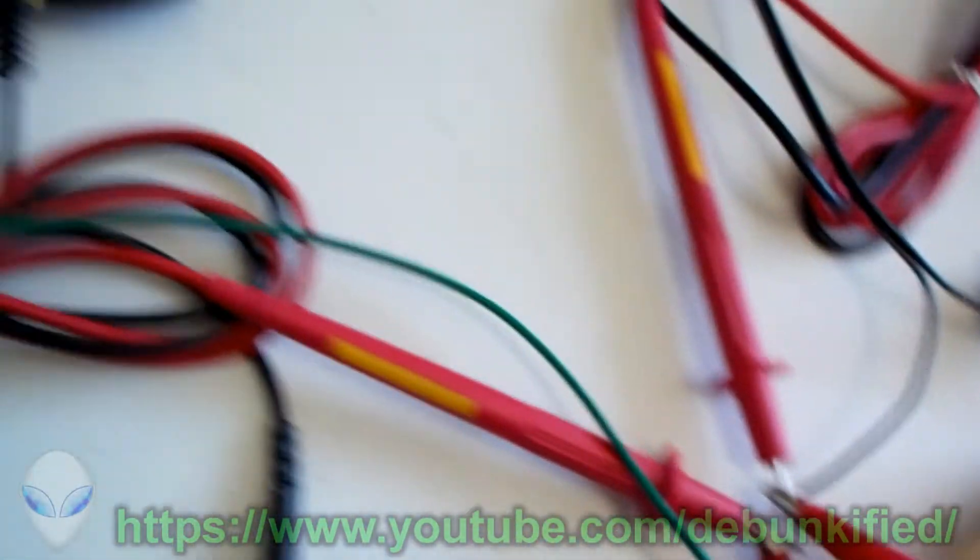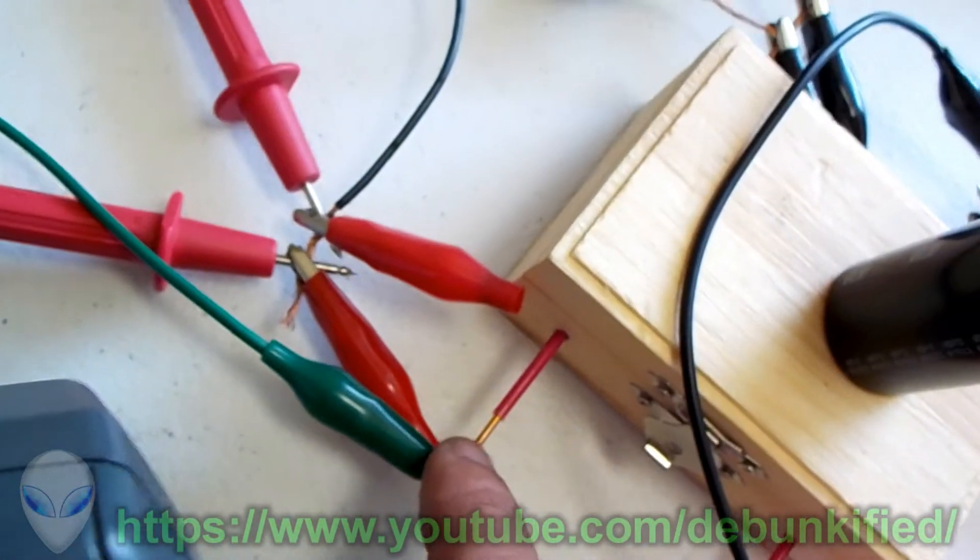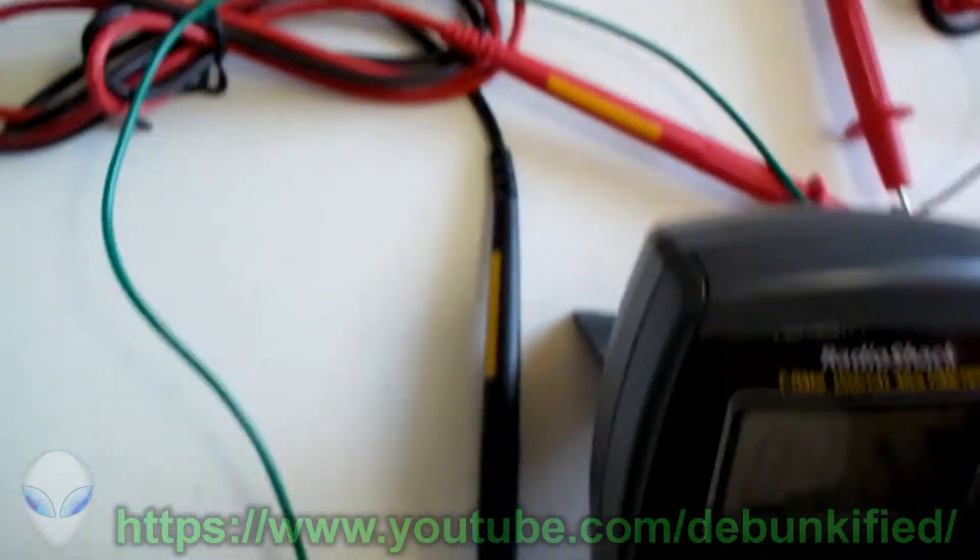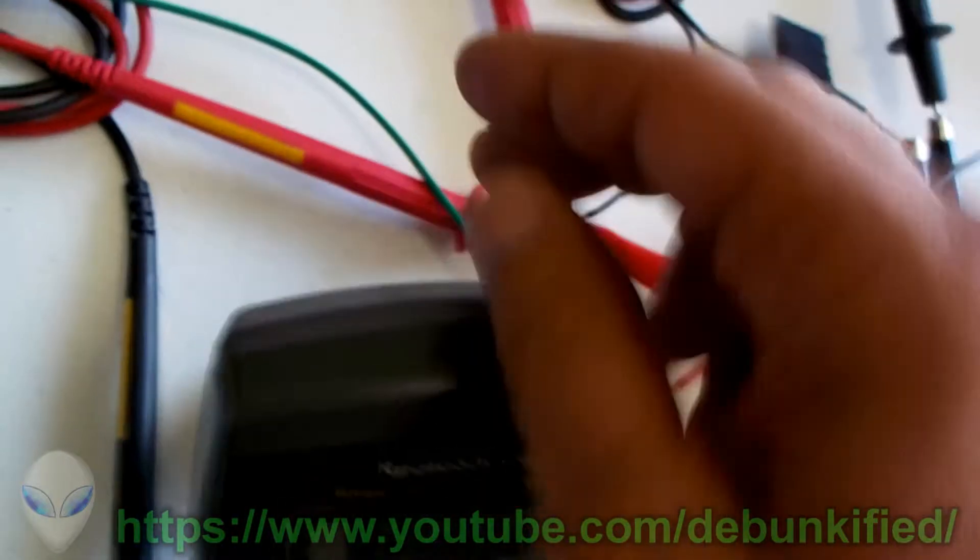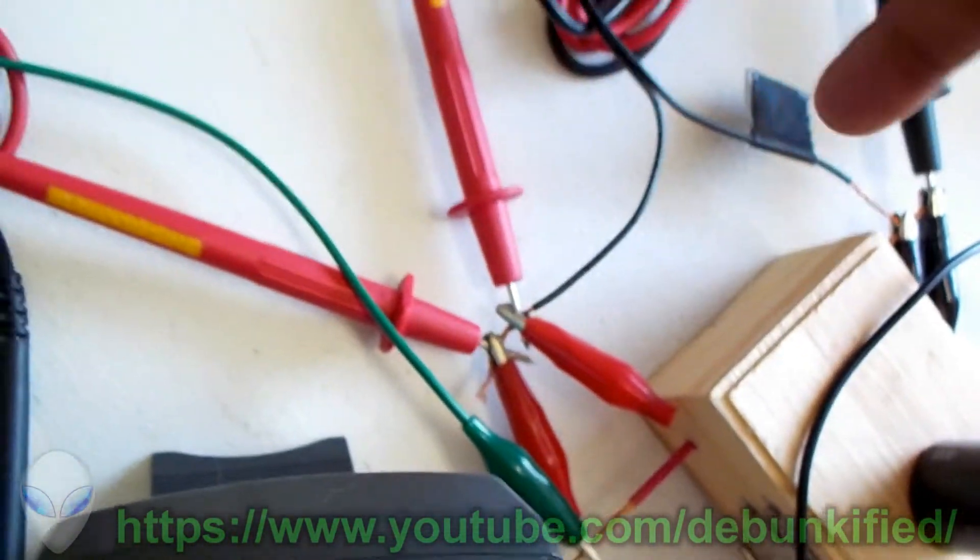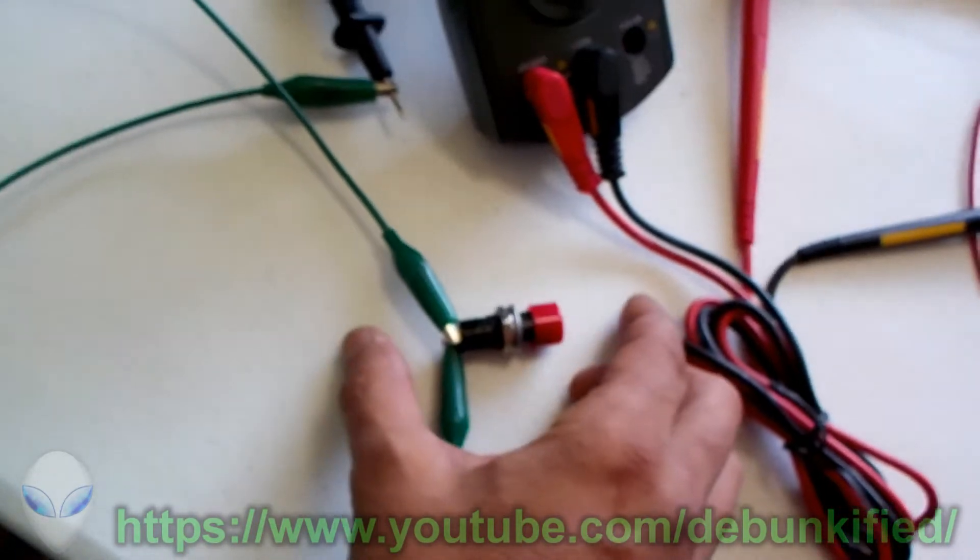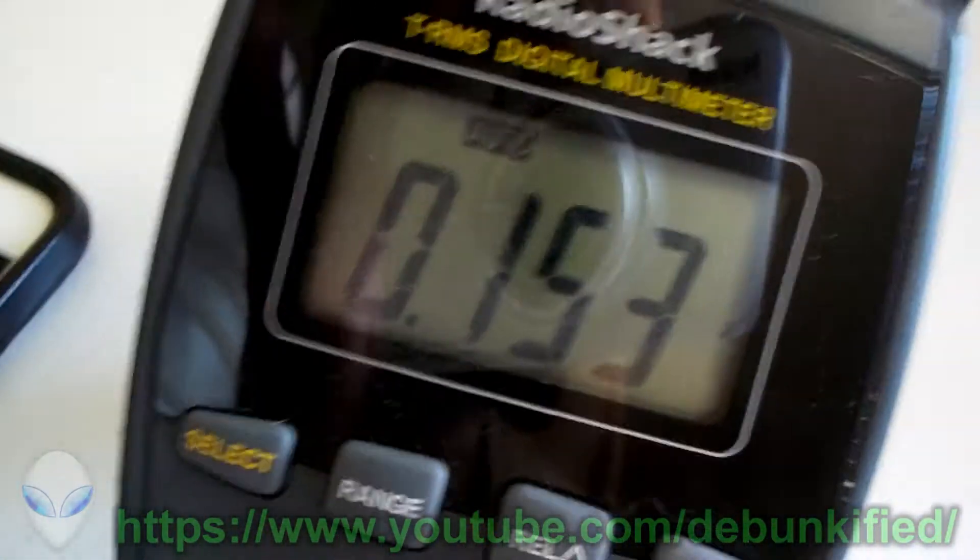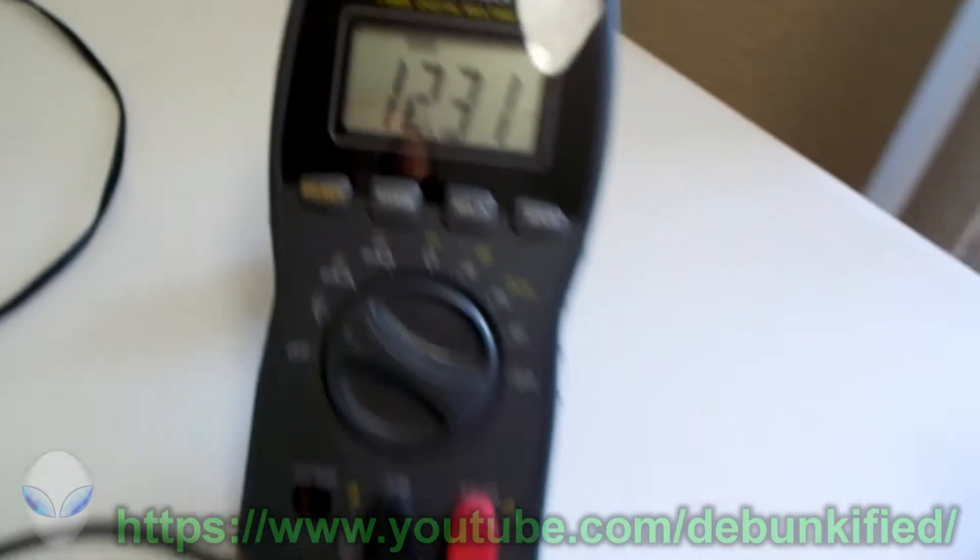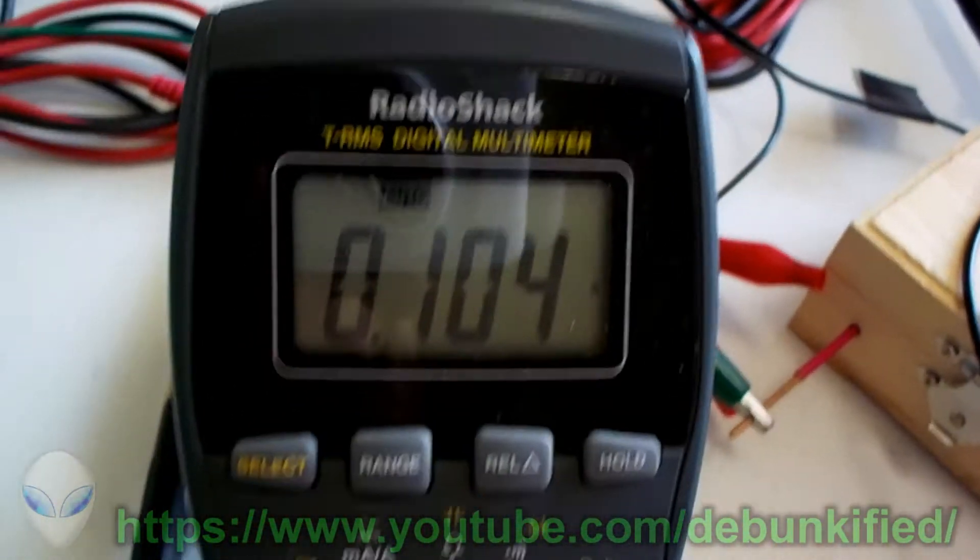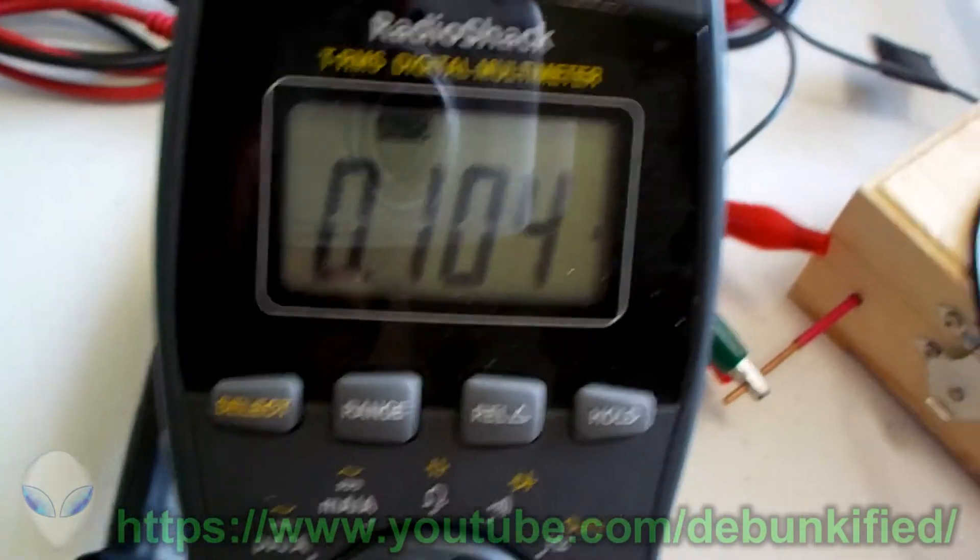Right here connected to the positive through our meter over here. This is the positive right here. So we're going to get this back up to speed and what we're going to do is completely disconnect it and see that there's no input current or power going in at all, while we're still circulating around wattage over here on the output.